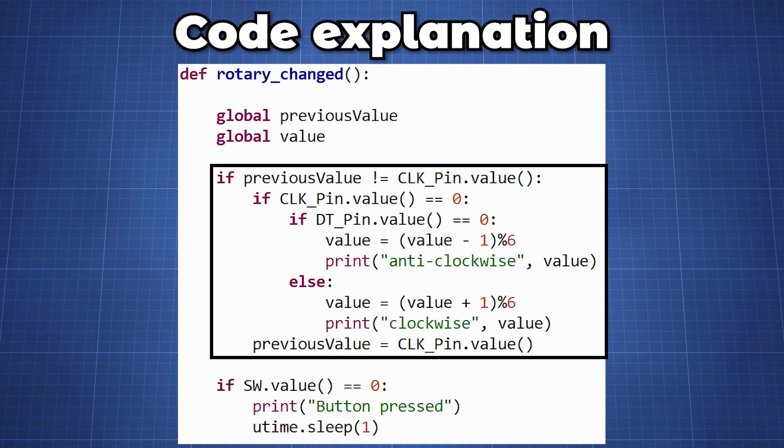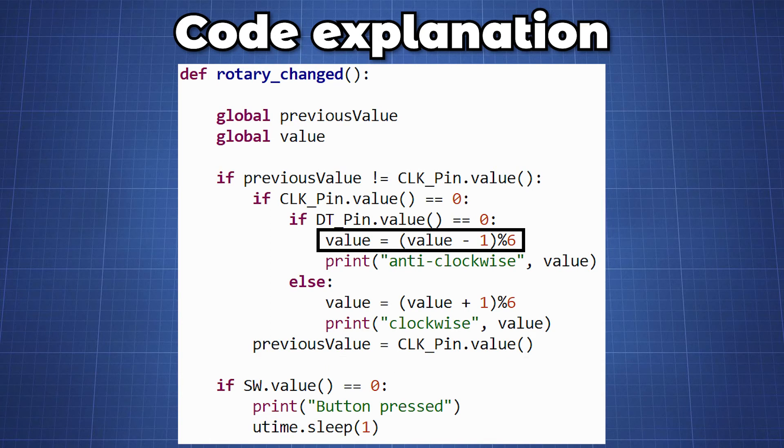If our previous value is not equal to the clock pin value we will check if the clock pin value is zero and if it is true we check to see if the DT pin is zero then we know the knob has turned in the anticlockwise direction. So we set our value equal to value minus one and we will take the modulo six of it and now we can count from zero to five and then if we get past five we will go back to zero again and then we print out anticlockwise and show the value.